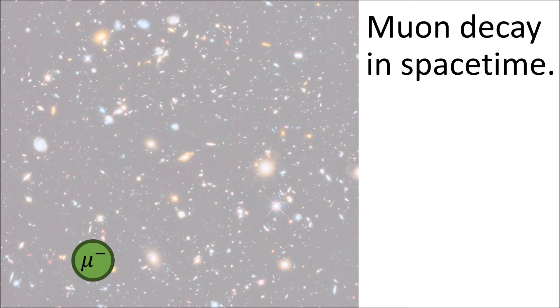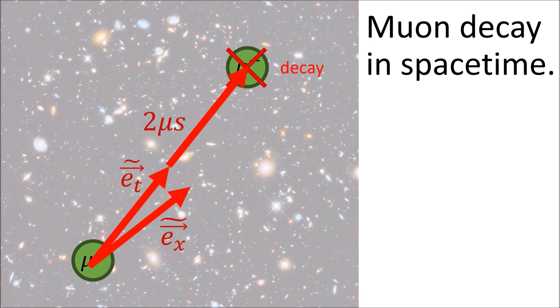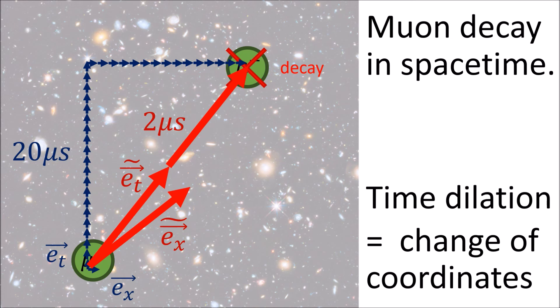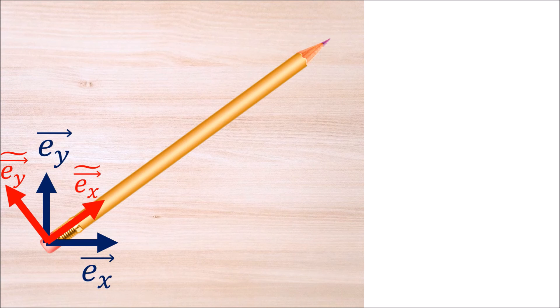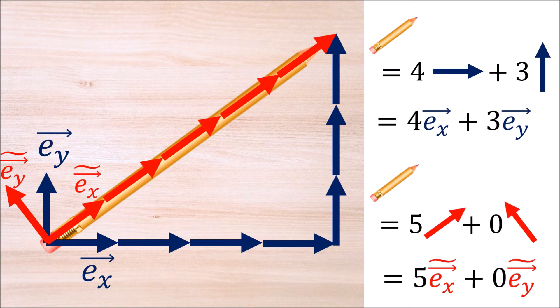If we observe the muon creation and its later decay in spacetime, the separation between these two spacetime points can be measured using vectors. With this coordinate system, the decay time can be measured to be 2 microseconds. But in another coordinate system, the decay time can be measured to be 20 microseconds. Time dilation in special relativity is really just the result of measuring spacetime points using different basis vectors, or in other words a different coordinate system. This is almost the exact same thing as measuring the pencil using our different basis vectors and getting different components as a result.